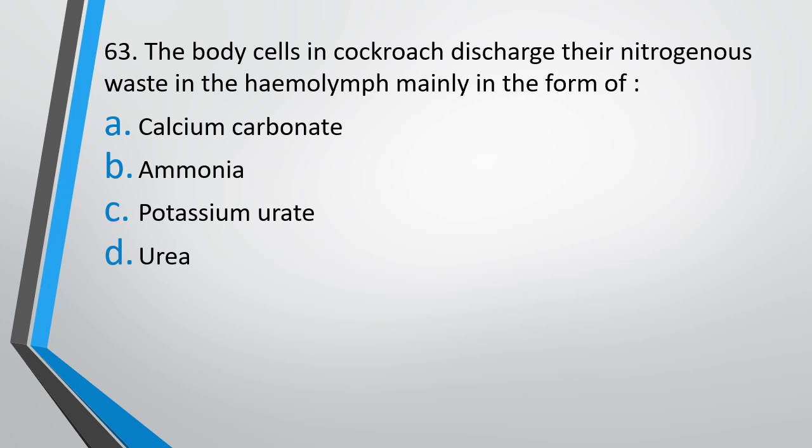Question number 63. The body cells in cockroach discharge their nitrogenous waste in the hemolymph, mainly in the form of calcium carbonate, ammonia, potassium urate or urea. The correct answer is Option C, that is potassium urate.